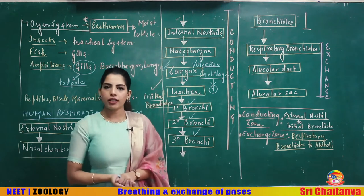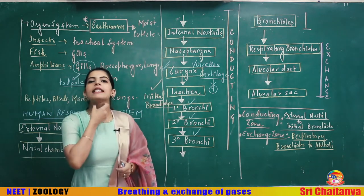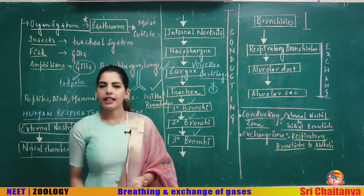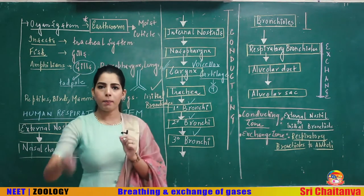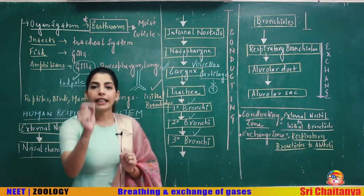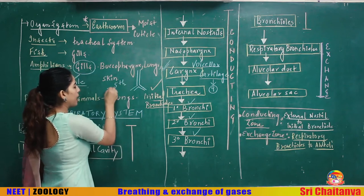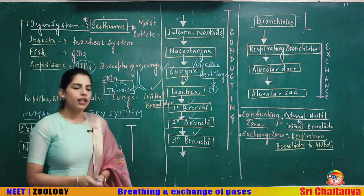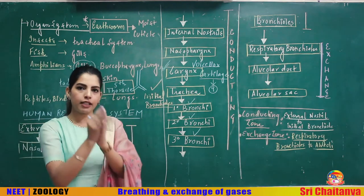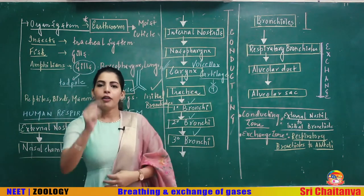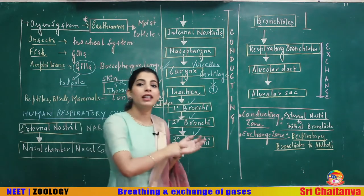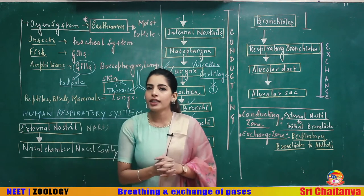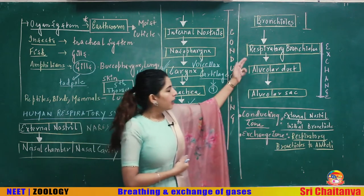An important NCERT point: the trachea divides into two primary bronchi at the level of the fifth thoracic vertebra. From external nostrils to some part of the bronchioles is the conducting zone, which conducts air. The major function — gas exchange — takes place in the exchange zone.